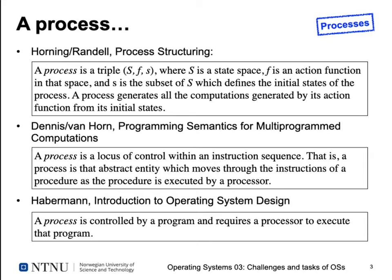Horning and Randall described in their book Process Structuring a process as follows: the process is a triple (S, f, s), where uppercase S is a state space, f is an action function in that space, and lowercase s is a subset of uppercase S which defines the initial states of the process. The process generates all the computations generated by its action function from its initial states. This is a pretty formal description, and probably not ideal to reuse capital and lowercase S in the same definition.